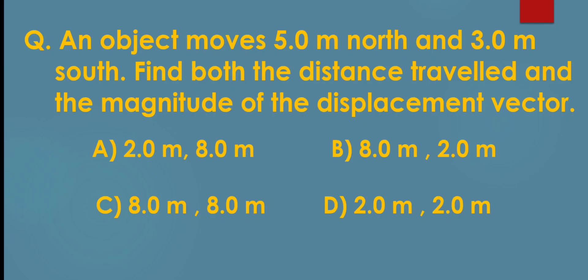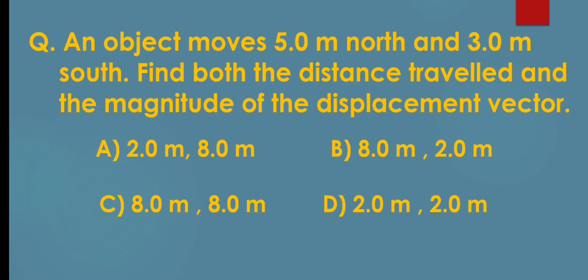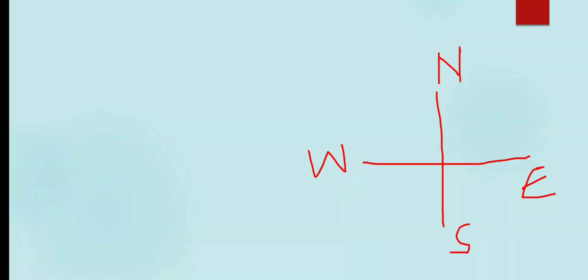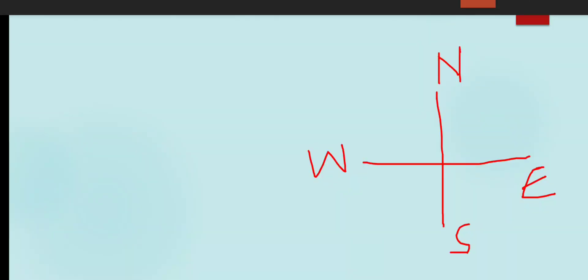Distance is a scalar quantity and displacement is a vector. The object moves 5m towards north and 3m towards south.